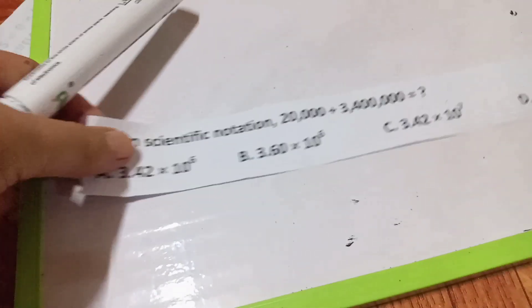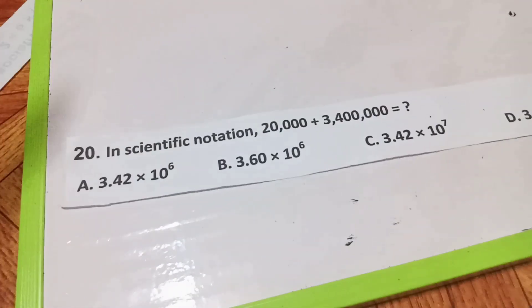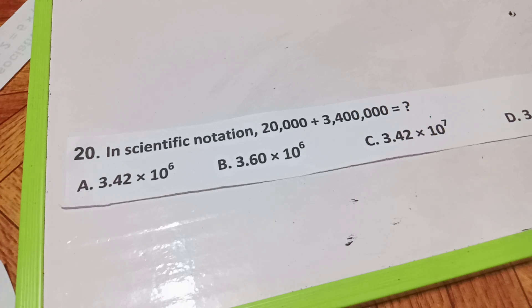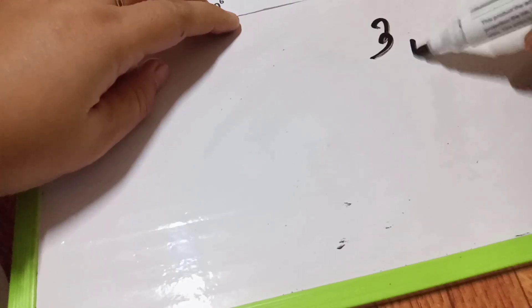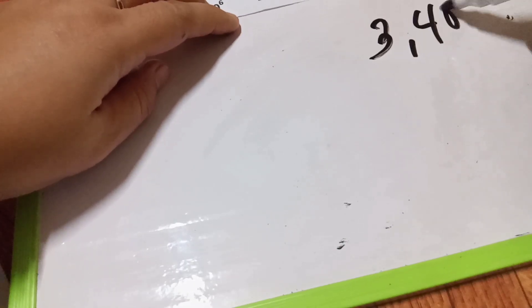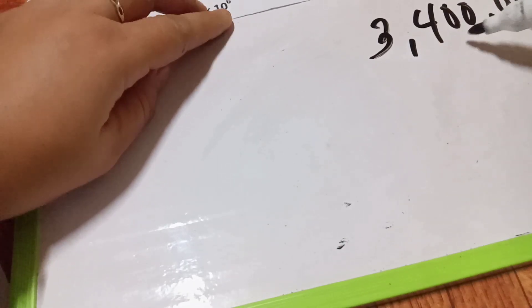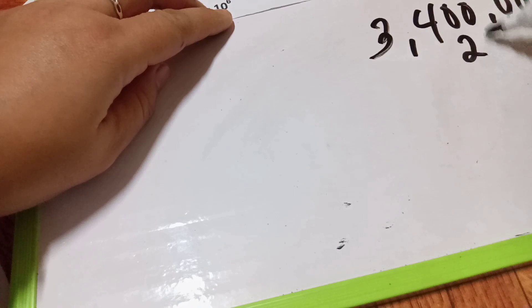Question number 21: In scientific notation, express 20,000 plus 3,400,000. All you have to do is add them together: 3,400,000 plus 20,000 equals 3,420,000.